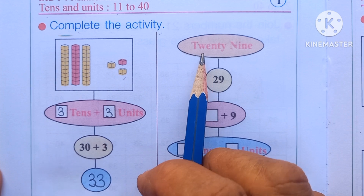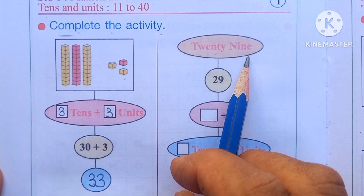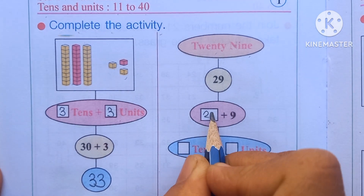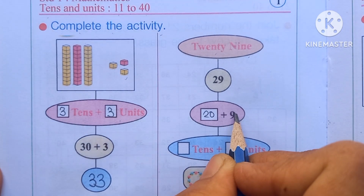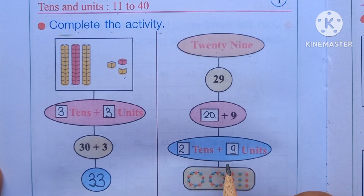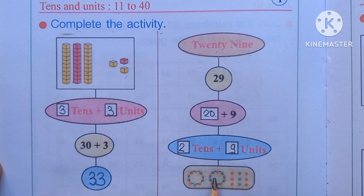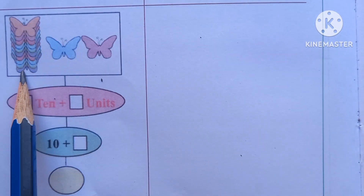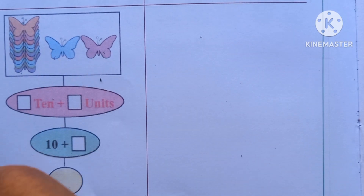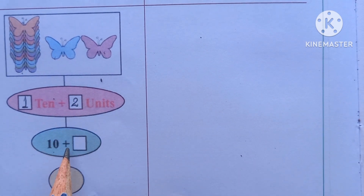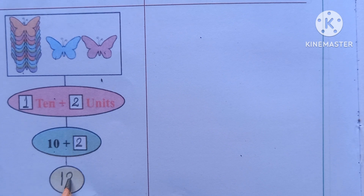Here is the number 29. In digits, 29 means 20 plus 9. 20 means 2 tens and 9 means 9 units. Now, 1 ten and 2 units. Write here: 1 ten plus 2 units means 10 plus 2. The addition of these numbers is 12.